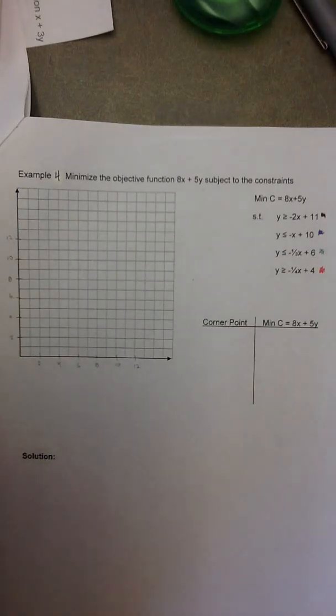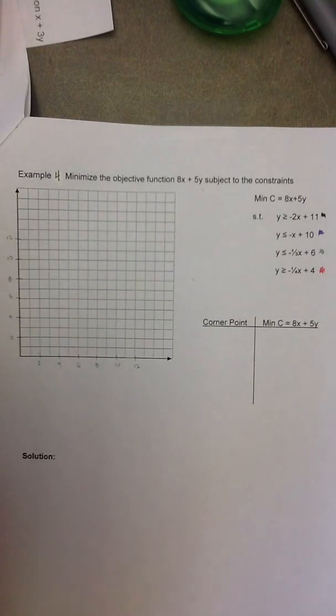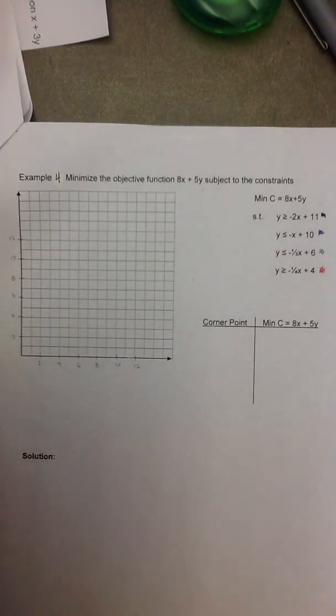Here we have a linear programming problem with four constraints that we need to graph the inequalities to find the corner points of the feasible set so that we can plug them into the objective function and find the optimal solution.